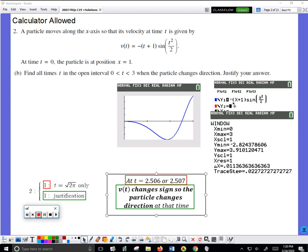I have in my calculator already the velocity. I set my window for 0 to 3. I do a zoom fit. I get this graph of the velocity. And I notice that only at this time, which turned out to be 2.507 or 2.506 depending on how your calculator rounds,